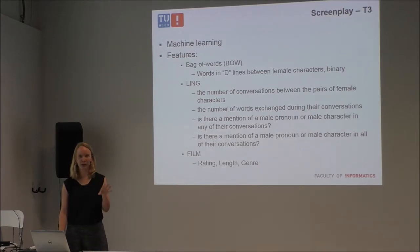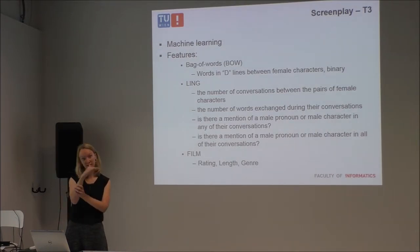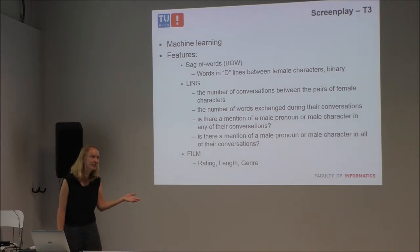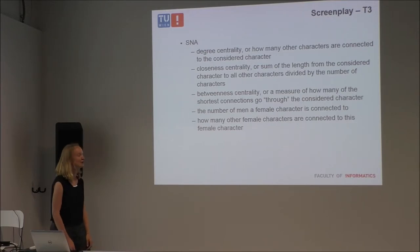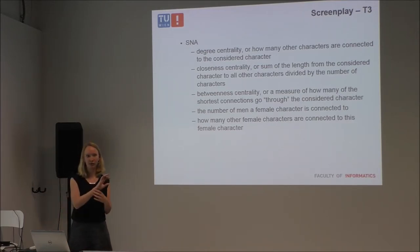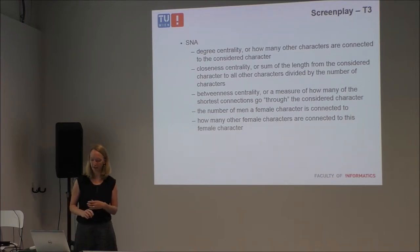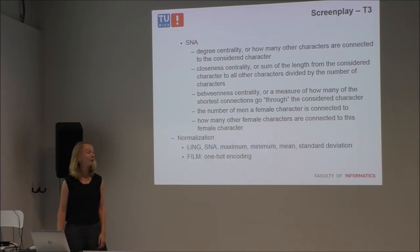The website is very comprehensive — all the films analyzed also appear on this website, with information about what the score is and how many tests passed. The fourth and final category of features were social network features, using the graph created for T2 to calculate degree centrality, closeness centrality, betweenness centrality, the number of male and female characters a character is connected to, and how many female characters a given female character is connected to. These were also normalized for the film features.